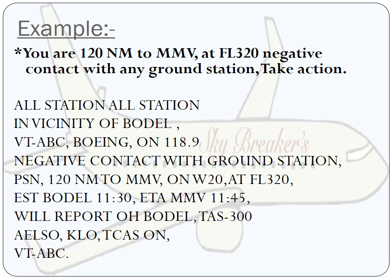Here is the example procedure: 'All stations, all stations in vicinity of Bordel, Victor Tango Alpha Bravo Charlie, Boeing, on 118 decimal niner, negative contact with ground station. Position, position: 120 nautical miles to Mike Mike Victor on Whiskey 20 at flight level 320. Estimating Bordel 1130. ETA — estimated time of arrival — Mike Mike Victor 1145. Will report overhead Bordel. True airspeed 300. All external lights switched on. Keep lookout. Traffic collision avoidance system on. Victor Tango Alpha Bravo Charlie.'